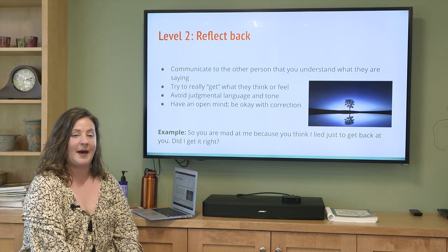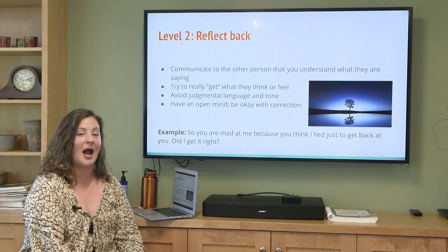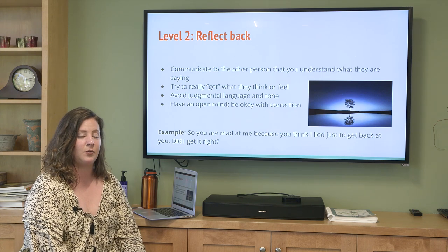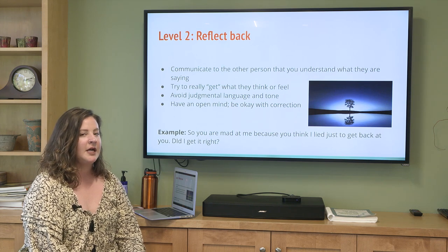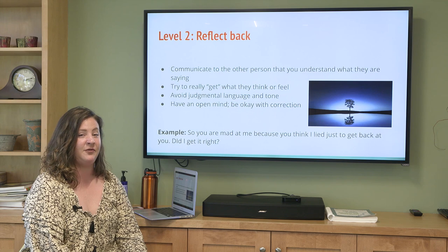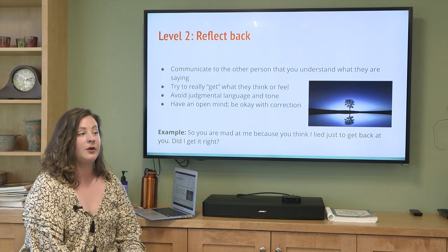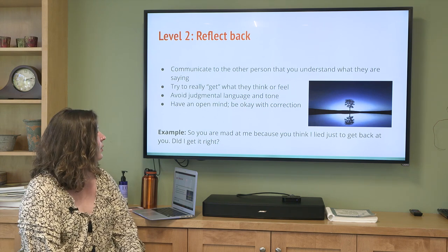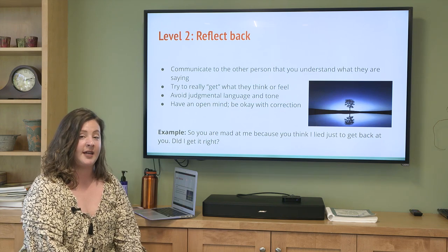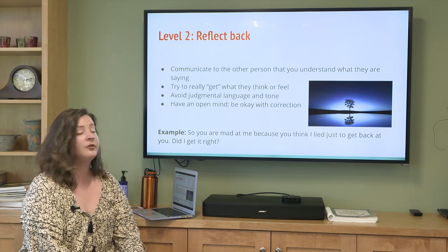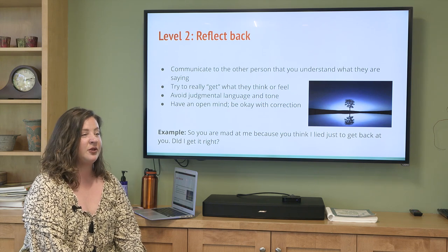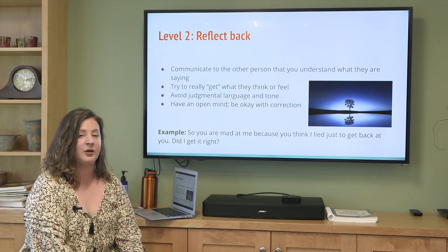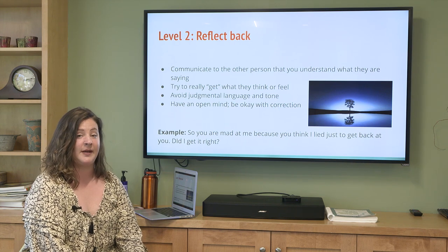Level two is reflecting back, and this is a really good place to start practicing validation. When we reflect back, we communicate to the other person that we understand what they're saying. That might look like: 'So I hear you telling me that you failed your test and you feel shameful — is that right?' We want to get what they are thinking and feeling. We want to avoid judgmental language and tone — avoid words like 'that sucks, you shouldn't have done that' — and make sure our tone is not judgmental either.